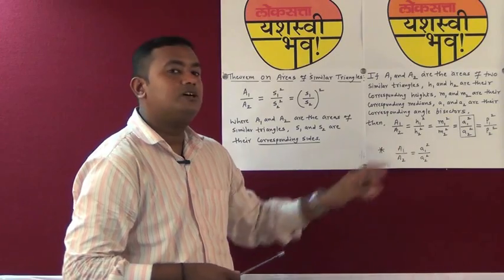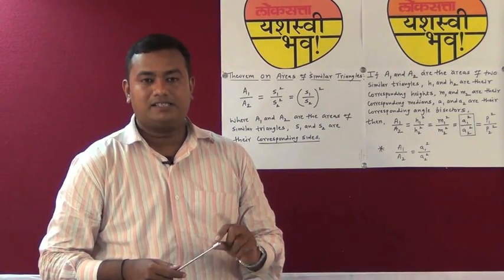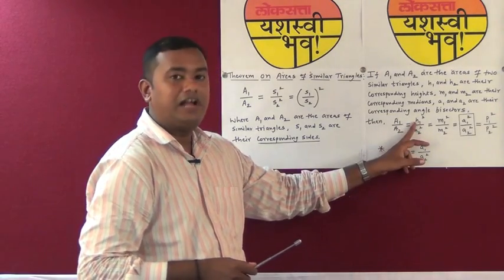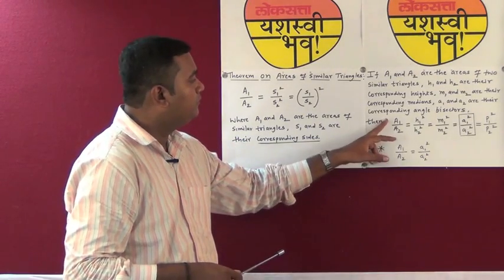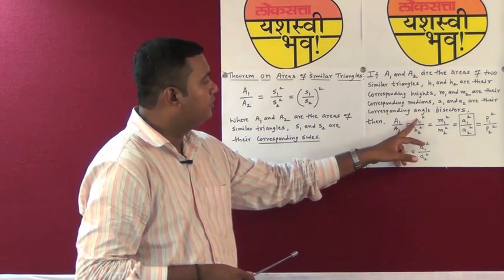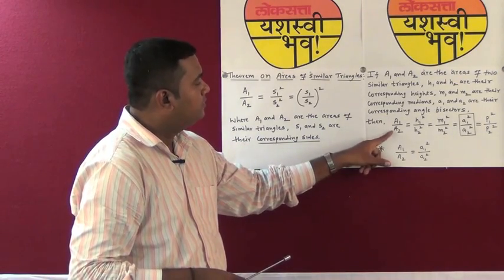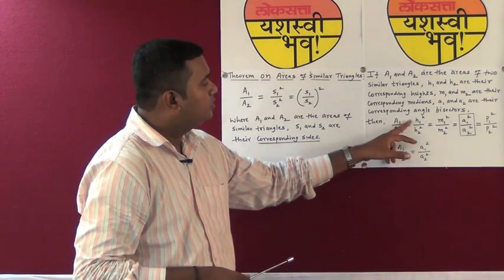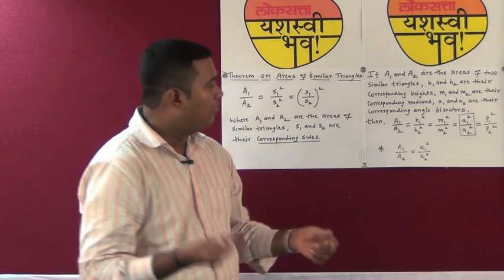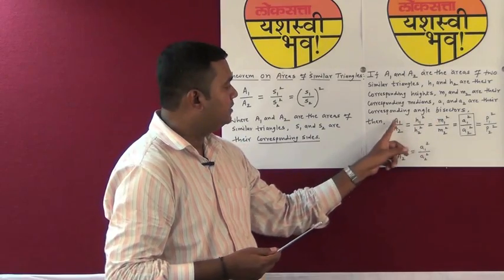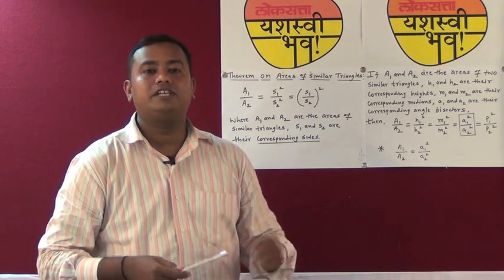In such a case, you have to write the entire statement of the theorem of areas of similar triangles and instead of 'sides,' you replace the word with 'height,' 'medians,' 'perimeter,' or 'angle bisector segment.' For example, if you are writing A1 upon A2 is equal to h1 square upon h2 square, then you write the reason as: the ratio of areas of two similar triangles is equal to the ratio of the square of corresponding heights. If you are writing the ratio of medians, you change the word to 'medians.'